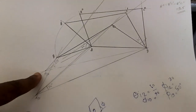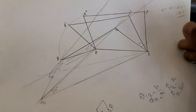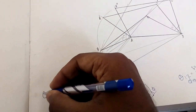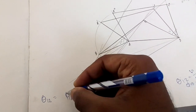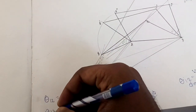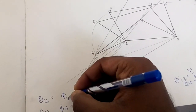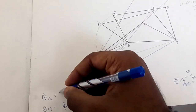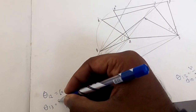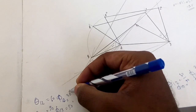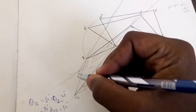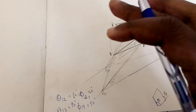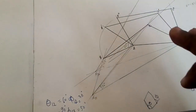To find the relative pole, you are given that for a particular theta 1-2, phi 1-2 is given, and for theta 1-3, phi 1-3 is given. In the example I have taken: theta 1-2 is 60 degrees, phi 1-2 is 30 degrees, theta 1-3 is 90 degrees, and phi 1-3 is 50 degrees.